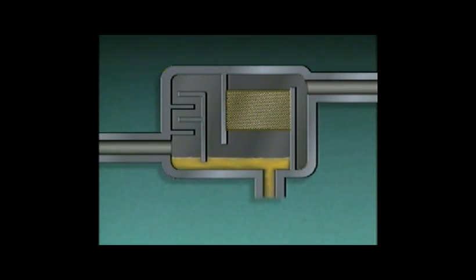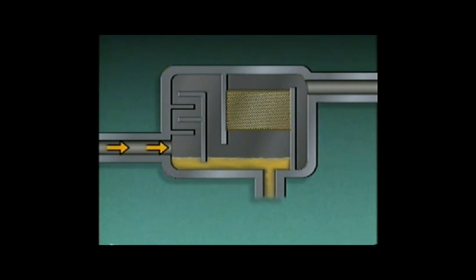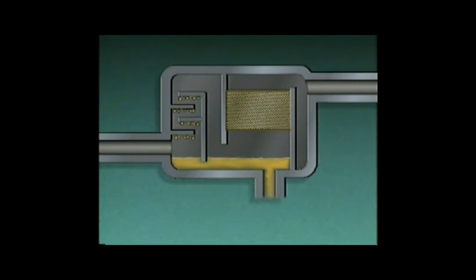An oil separator includes an inlet, a series of baffle plates, a wire mesh screen, a sump, and a gas outlet. Compressed gas entering the oil separator passes around the baffle plates and is forced to make rapid changes in direction. Because oil is heavier than gas, it is more difficult for the oil to make these changes in direction. As a result, oil droplets separate from the gas, collect on the baffles, and drip down into the sump. In this way, most of the oil is removed from the gas.